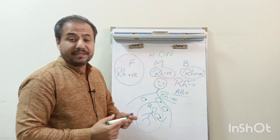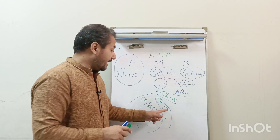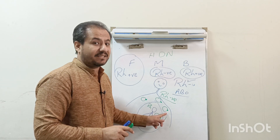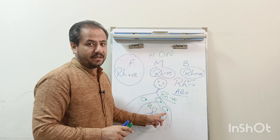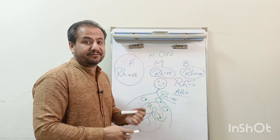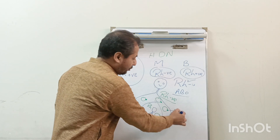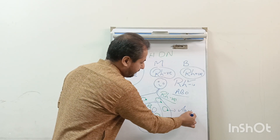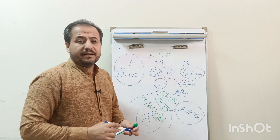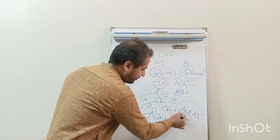As the mother has no Rh antigen, the immune system of the mother recognizes this Rh antigen as non-self antigen. So antibodies are produced against these Rh positive red blood cells and this Rh antigen. These antibodies are anti-Rh antibodies, and these Rh antibodies are IgG in nature.